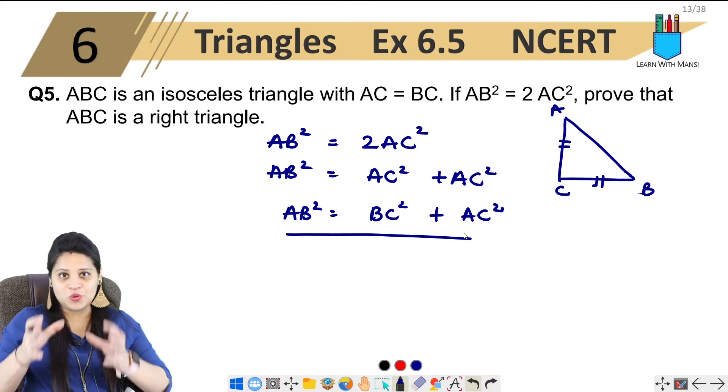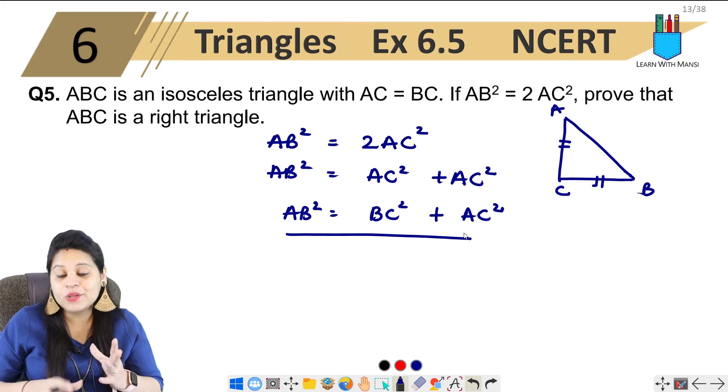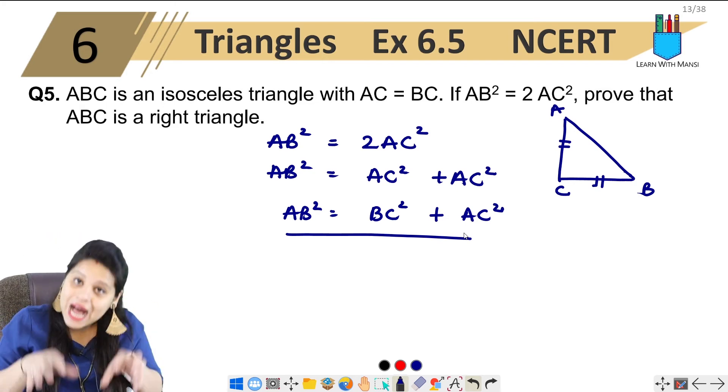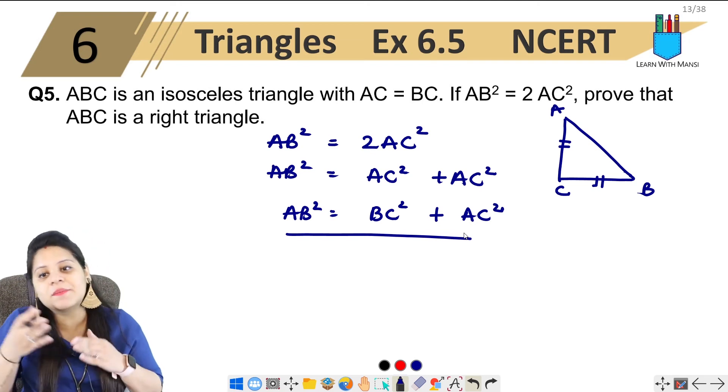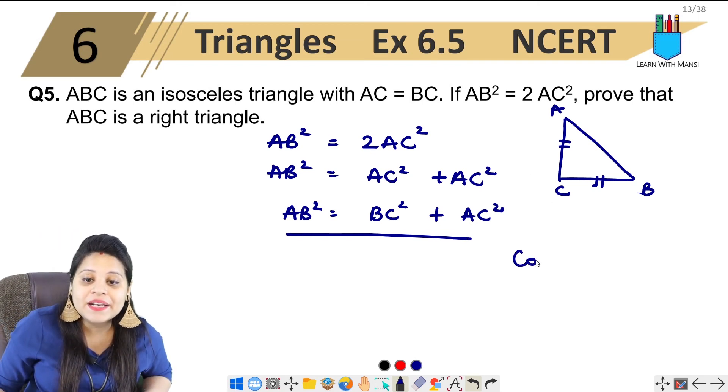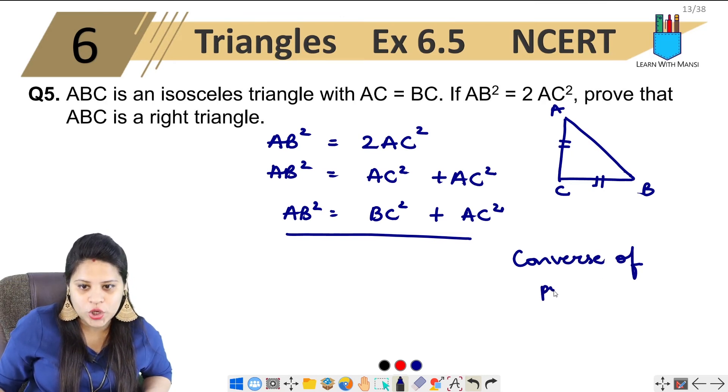Now let's see, when you have a 90 degree angle, we have to use Pythagoras theorem and write it. I have to use the right angle triangle, so let's write it, Converse of Pythagoras theorem.